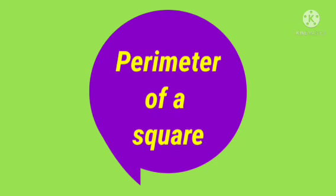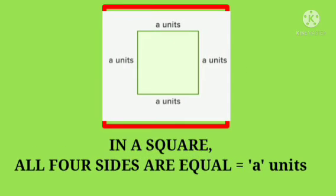Perimeter of a square. Let's find out. This is a square where all the four sides are equal, which is equal to a units.